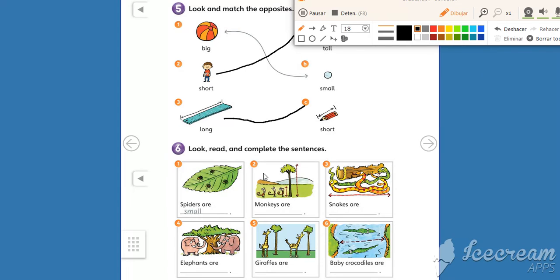Now, look at the number two. What can you see? Three monkeys and a tall tree. The sentence is, monkeys are what kids? Short, long, tall, small, or short? Short. Very good. Let's write the word. Short. Okay? Short.